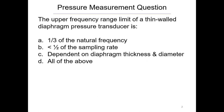The first review question has to do with thin-wall diaphragms. The upper frequency range limit of a thin-wall diaphragm pressure transducer is — options A, B, C, and D — what is it? Pause and think about that for a second and come back when you have an answer. Welcome back. The answer is D: all of the above.